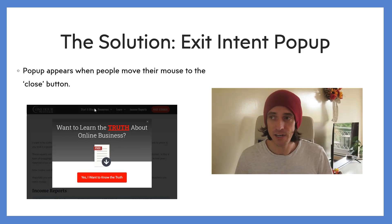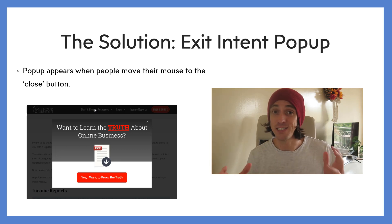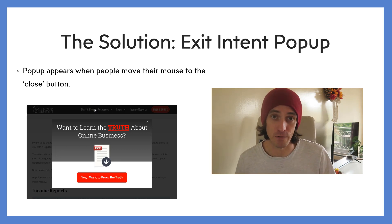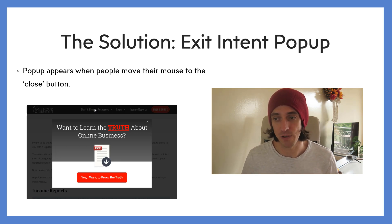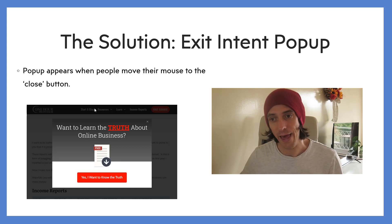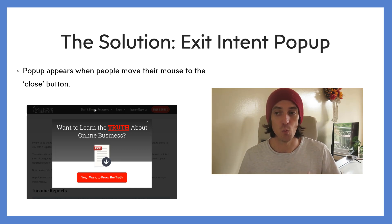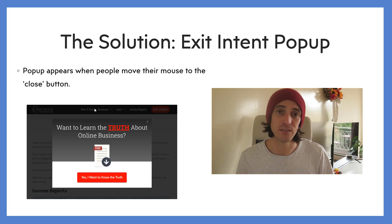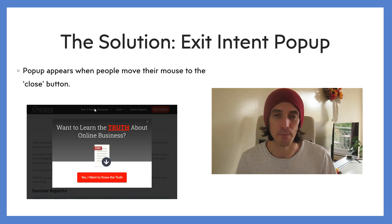For me, I decided to use an exit intent pop-up. The pop-up appears when a person tries to scroll to the X to exit the screen. Here's an example on the One Hour Professor website — Professor Ron, who's a member of this community. As you scroll on the way out, an exit intent pop-up comes up that says 'Want to learn the truth about online business? Click here,' and then you get a free click magnet if you give him your email address.